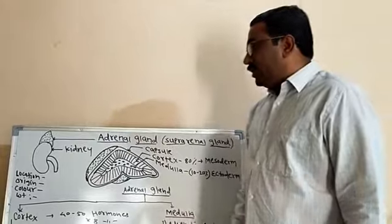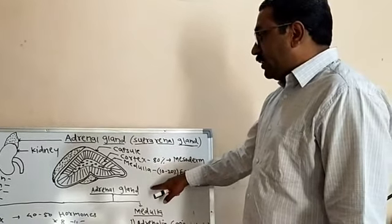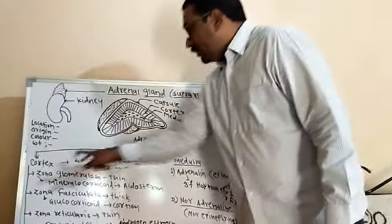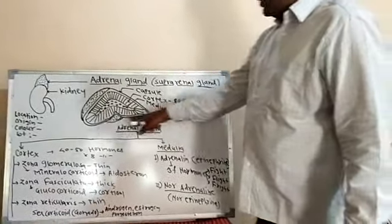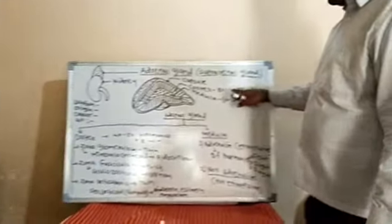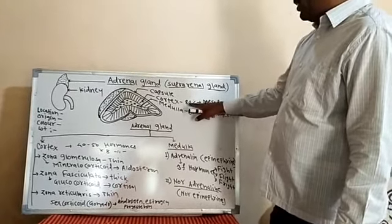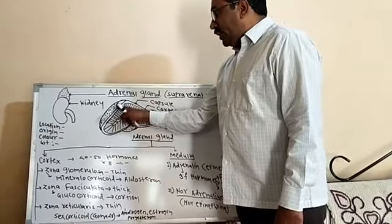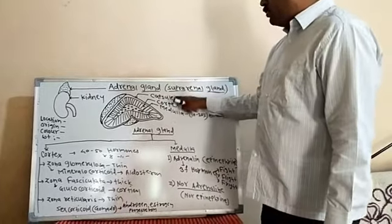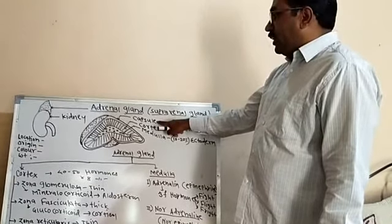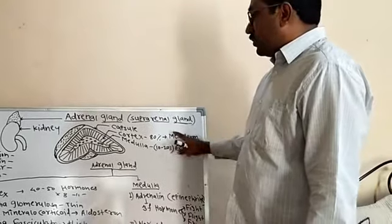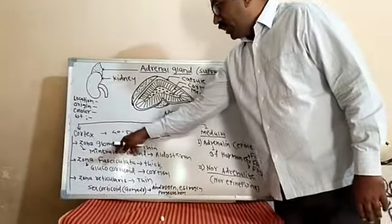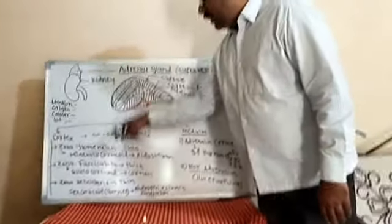The adrenal gland consists of two main parts: the outer part is called the cortex and the inner part is called the medulla. The cortex originates from mesoderm and occupies about eighty percent of the total gland. It is externally covered by a membrane of connective tissue called the capsule. Internally, the cortex is divided into three regions.